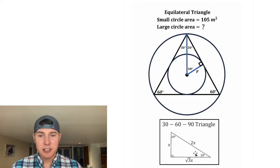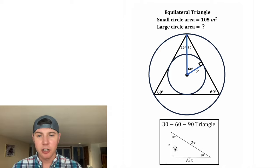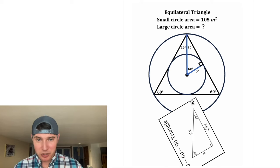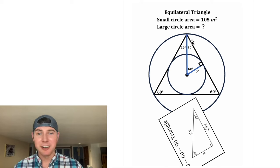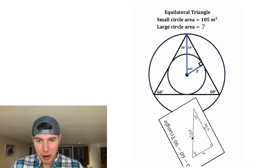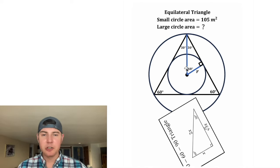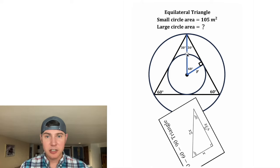In every 30-60-90 triangle, the hypotenuse is always twice as long as the smallest side. We can match this with the orientation of this triangle up here. So once again, the hypotenuse is twice as long as the smallest side, which means this hypotenuse needs to be twice as big as this side R. So this is going to be 2R.